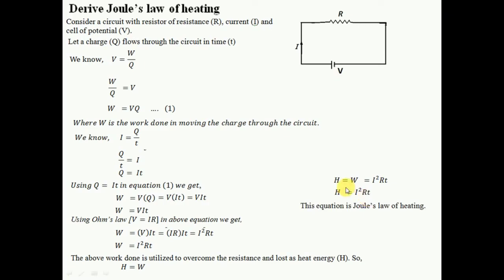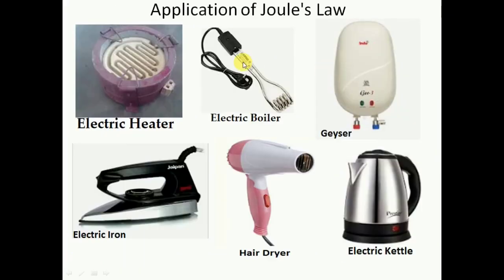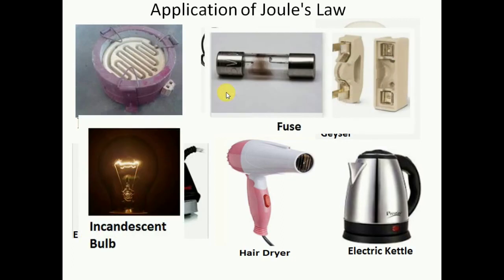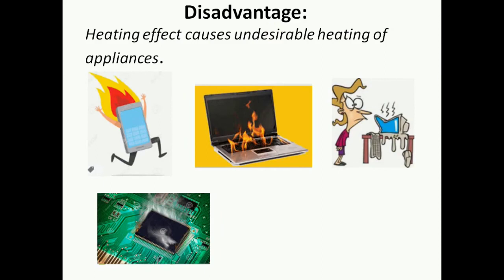The applications of Joule's law, or the heating effect of current, include electric heaters, electric boilers, and geysers — all appliances used for heating work on this principle. Two more examples are the incandescent bulb and the fuse. Note that the microwave oven is not an example, as it works on a different principle. The heating effect is not always useful — it causes unnecessary heating of appliances and computer processors, which is why processors are connected with fans to manage the heat produced.